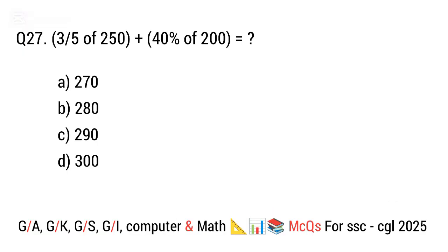Question 27. 3/5 of 250 plus 40 percent of what is equal to what? The right answer is option C. 290.